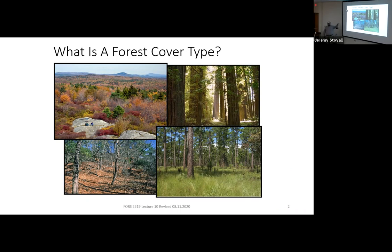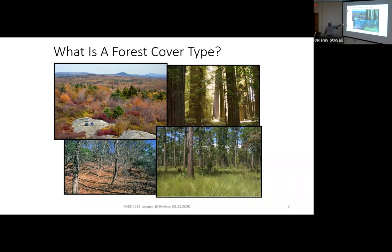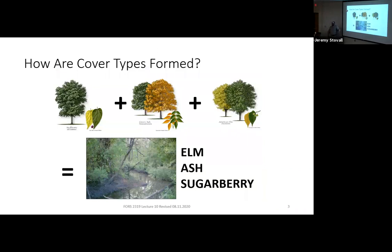As we look at each of these cover types, how are we describing them? How are we communicating what the forest cover type is? We're usually focused on the dominant tree species. Here's a very common forest cover type in East Texas — I've got hackberry up there, but we have sugarberry here for the most part in Texas. So elm-sugarberry, elm-hackberry, you'll hear these called a lot. When we look at these common cover types, we know the dominant species.